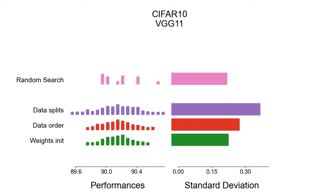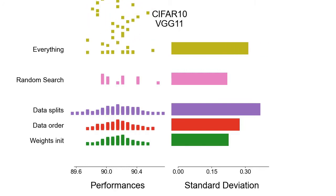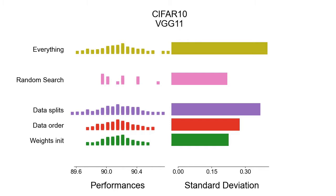Finally, we randomize everything to observe the cumulative variance. Each block is the performance of the best model in a random search, where sources of variation are randomized from one run of RandomSearch to another, including the seed for RandomSearch. They are kept fixed within each RandomSearch, however — we don't want to optimize the seed. But this is just one task; these observations might not generalize to different tasks. Let's try different ones.